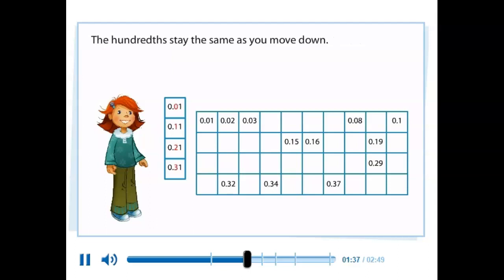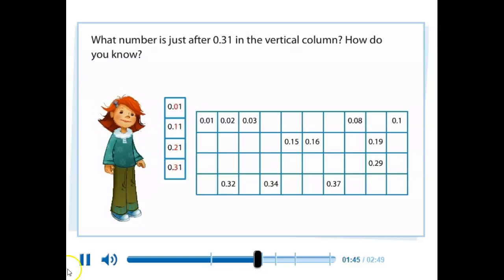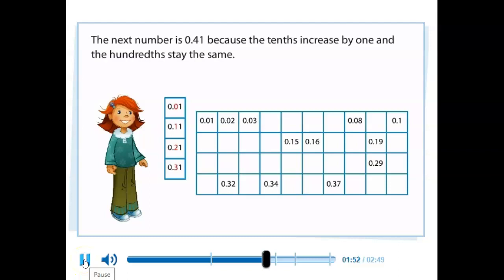The hundredths stay the same as you move down. What number is just after thirty-one hundredths in the vertical column? How do you know? The next number is forty-one hundredths because the tenths increase by one and the hundredths stay the same.